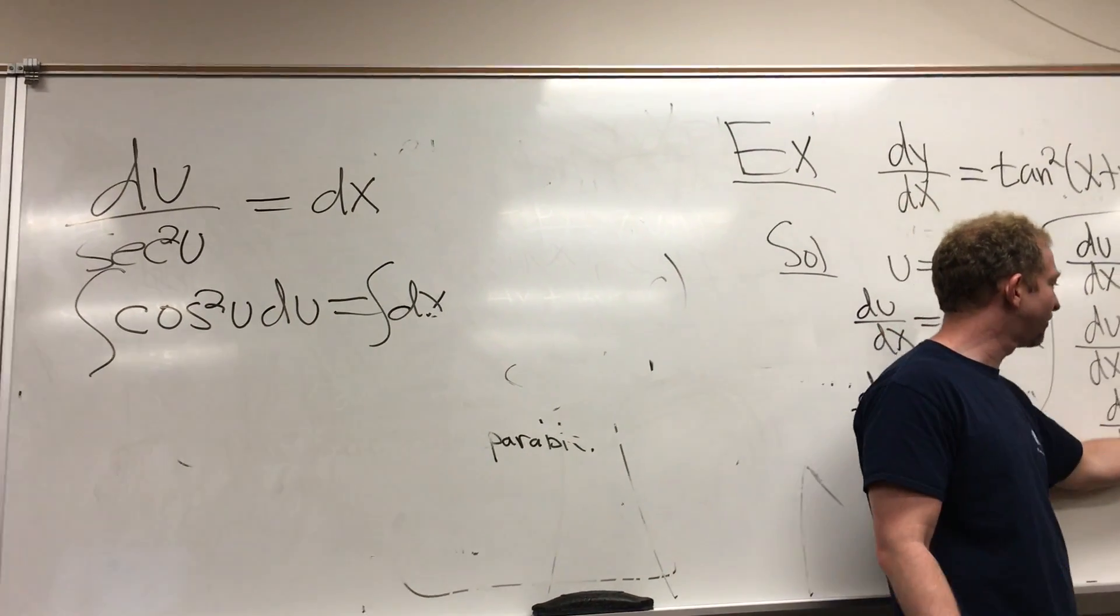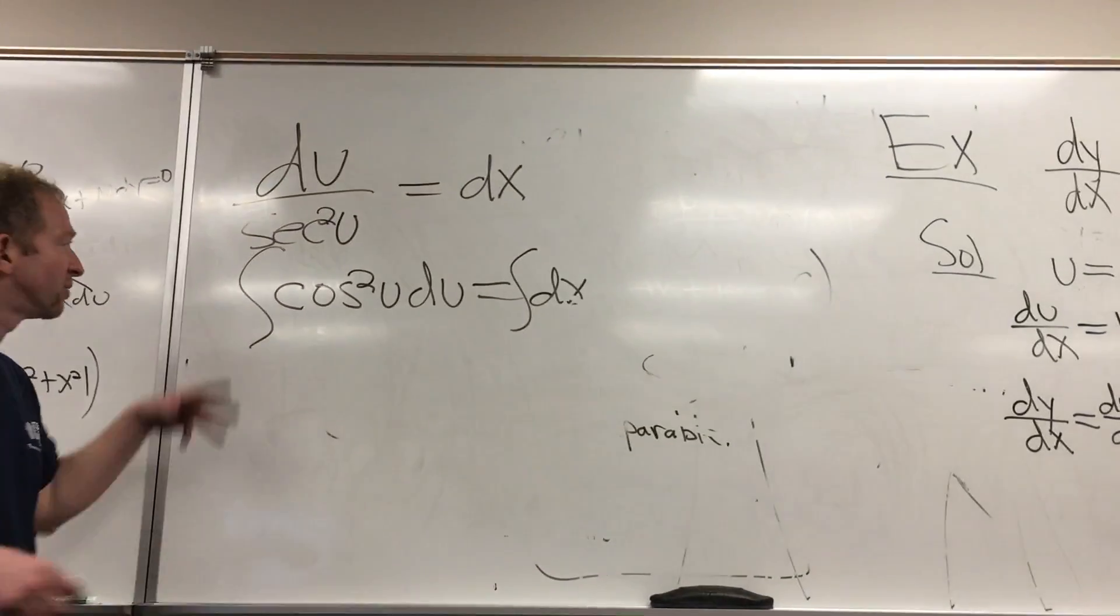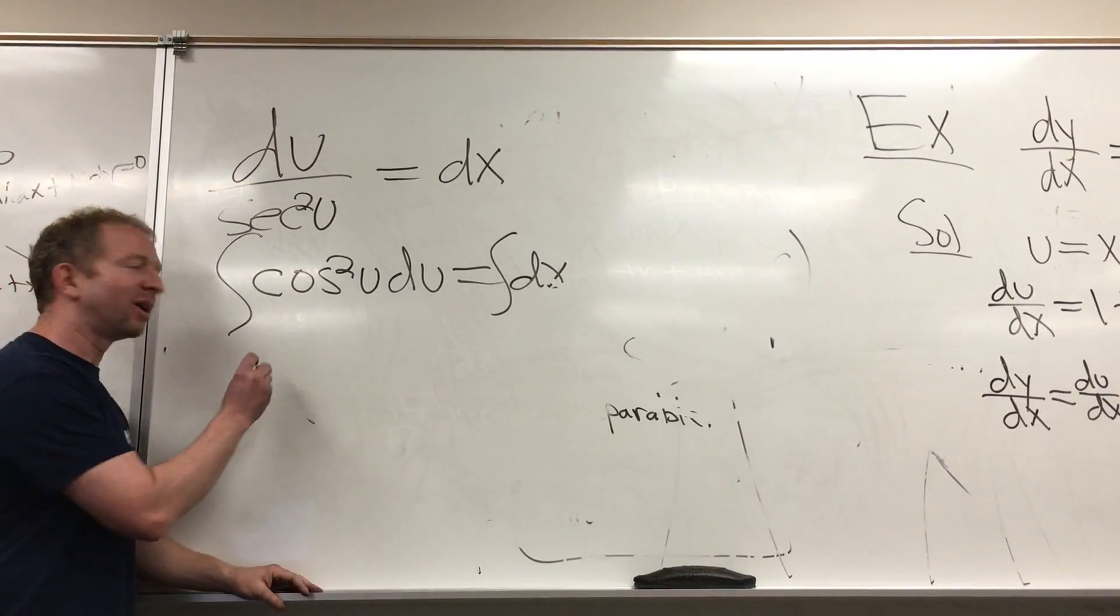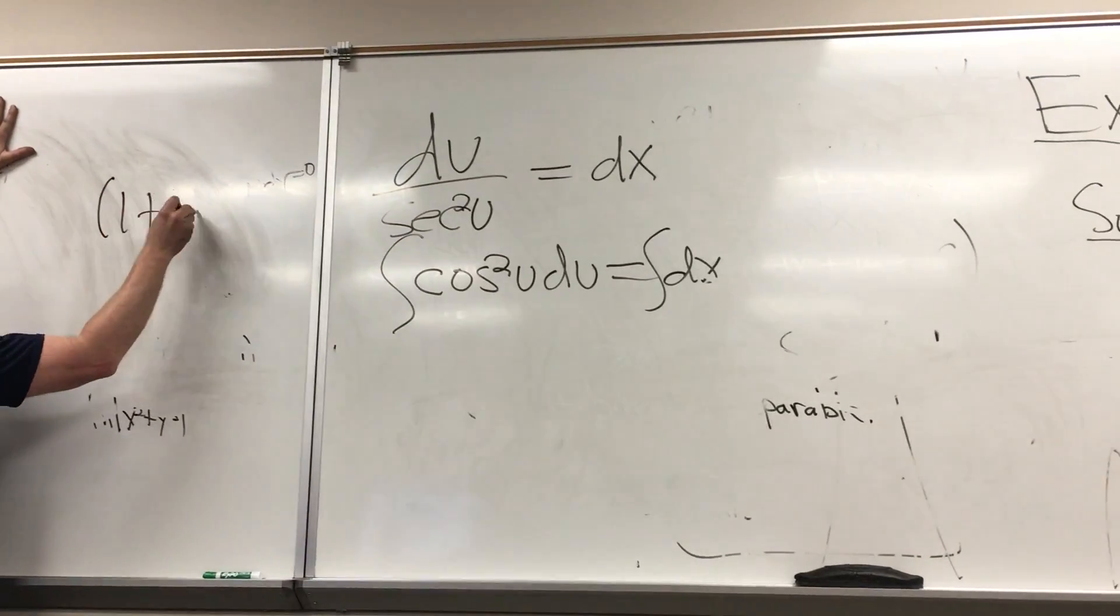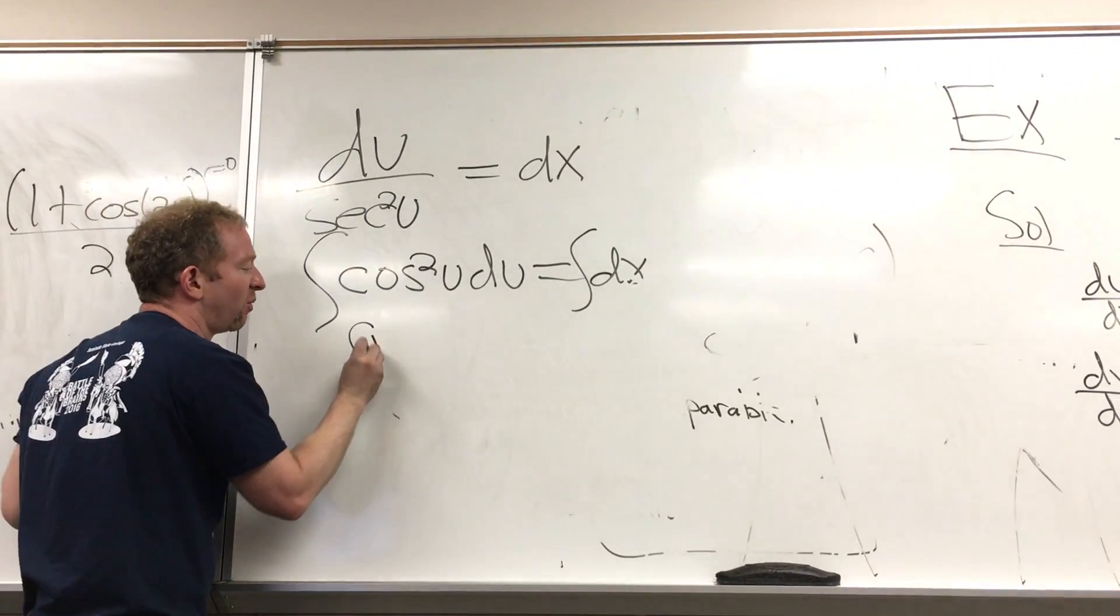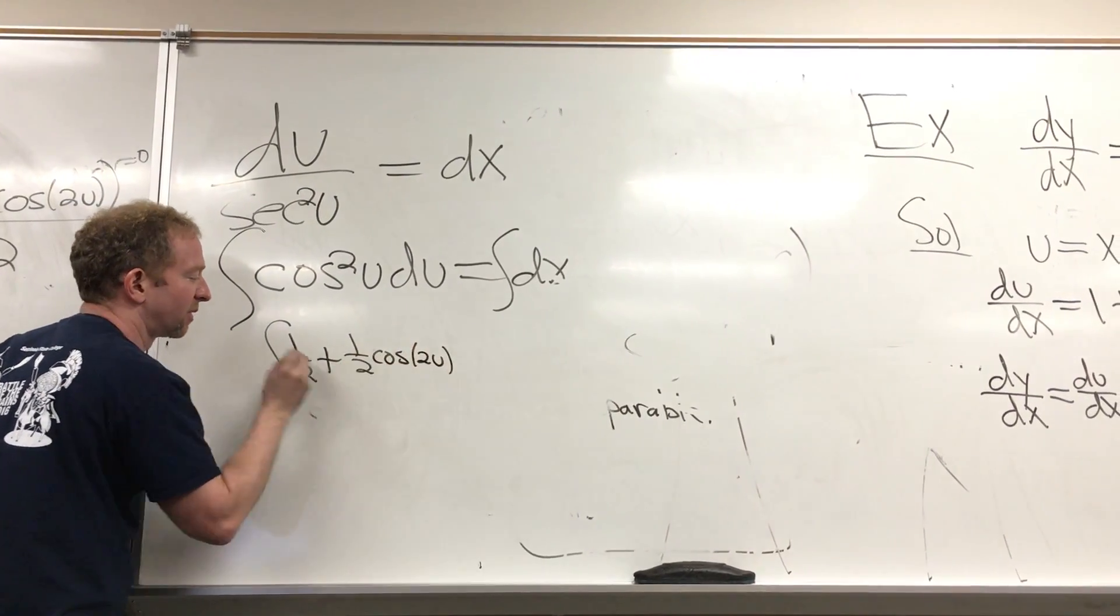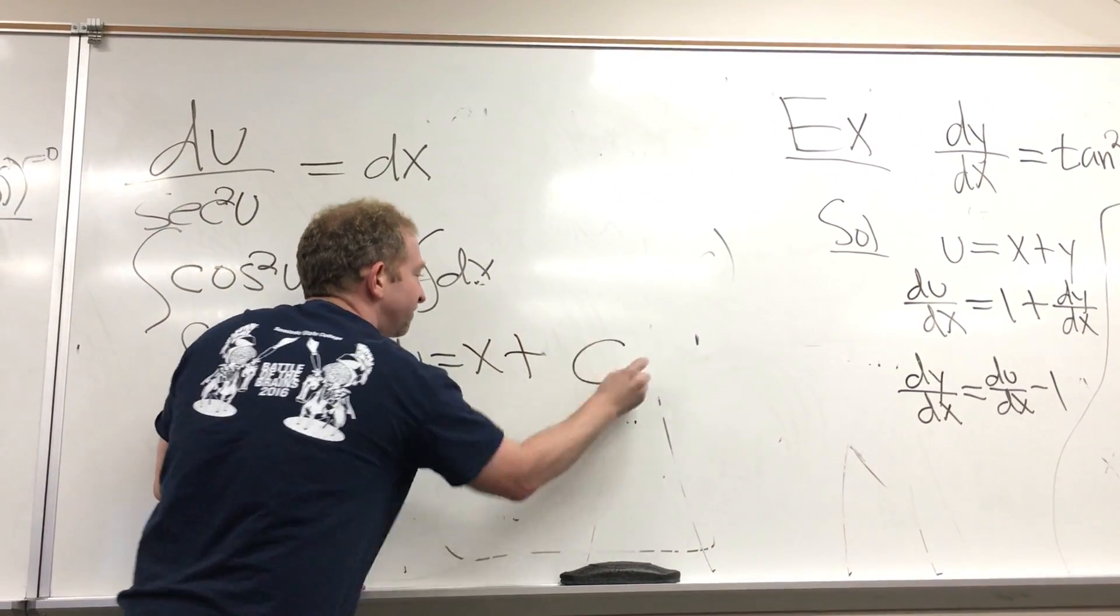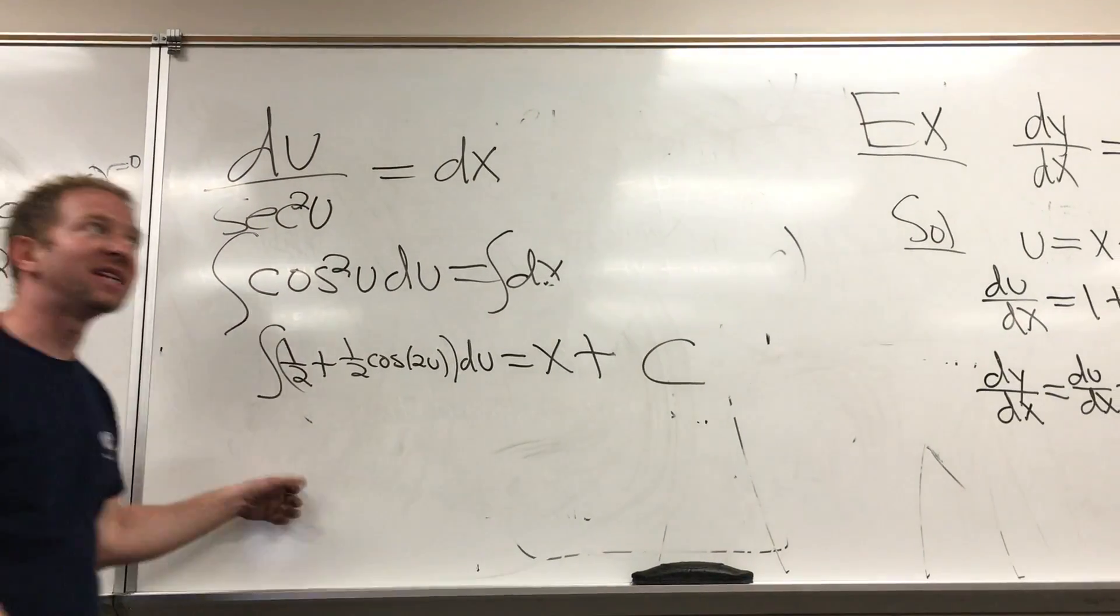And then you divide by the secant function squared. And you get this. But you know that secant is 1 over cosine. So 1 over secant squared is cosine squared. There's an identity here, right? This is, it's 1 plus cosine of 2u over 2. So I'm going to write it like this. I'm going to write it as 1 half plus 1 half cosine 2u du. And then this is just going to be x plus, I'll just go ahead and put the c there. Okay. That's an identity.